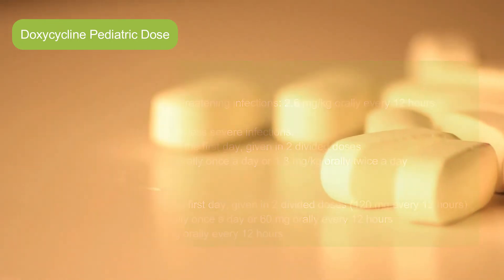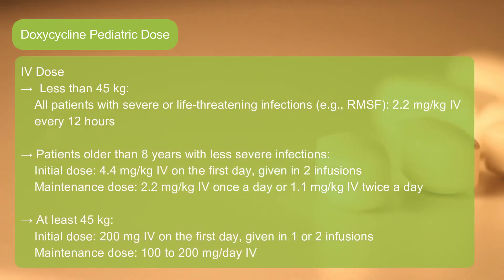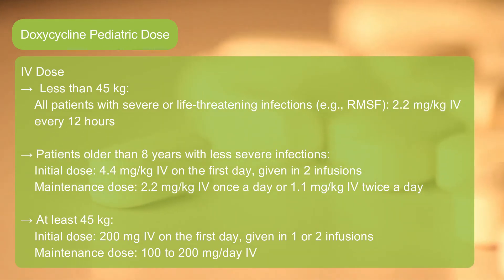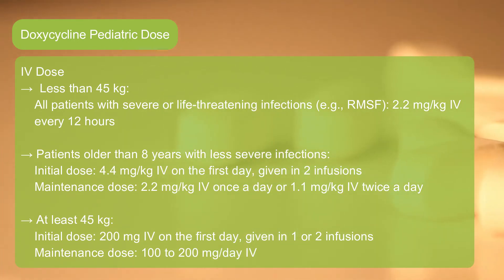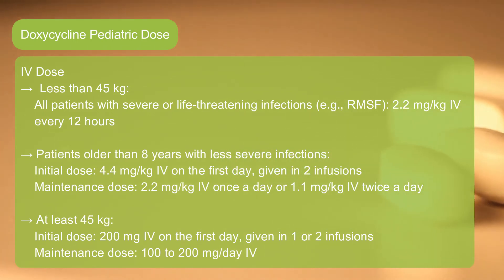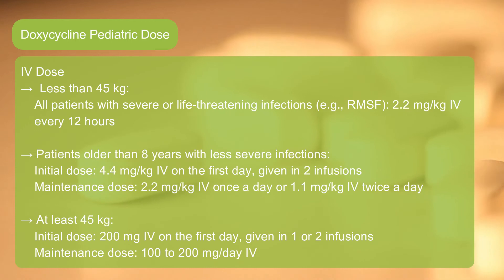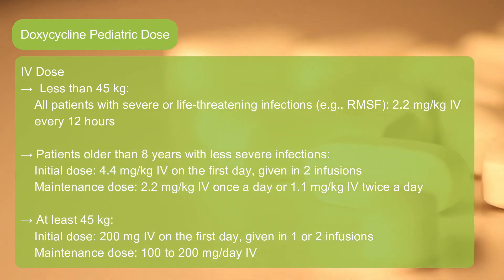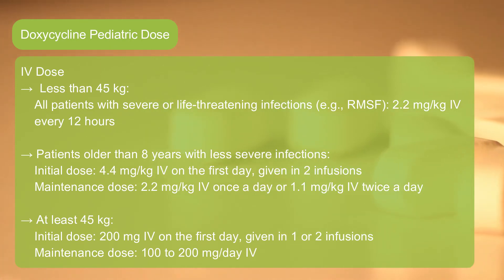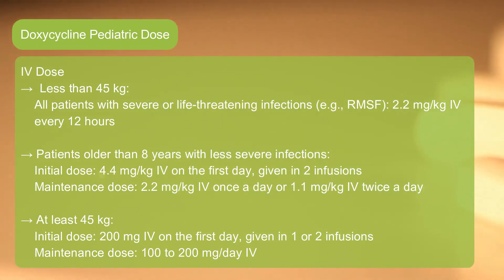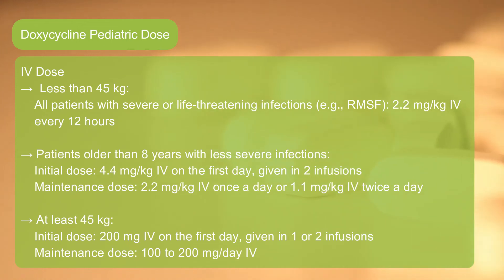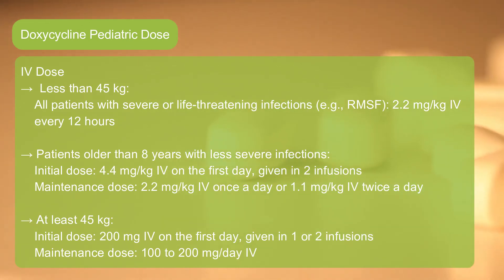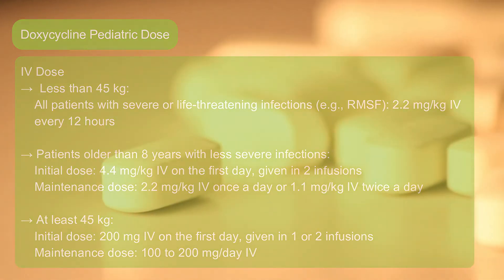Pediatric IV dose, less than 45 kg: All patients with severe or life-threatening infections (e.g., RMSF): 2.2 mg per kg IV every 12 hours. Patients older than 8 years with less severe infections — initial dose: 4.4 mg per kg IV on the first day, given in 2 infusions. Maintenance dose: 2.2 mg per kg IV once a day, or 1.1 mg per kg IV twice a day. At least 45 kg — initial dose: 200 mg IV on the first day, given in 1 or 2 infusions. Maintenance dose: 100–200 mg per day IV.